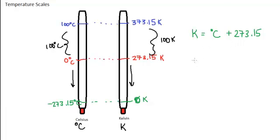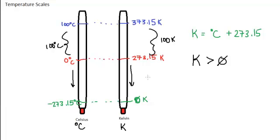One good thing to keep in mind, to make sure you don't accidentally go backwards with these subtractions or additions, is that the Kelvin temperature scale will always be positive — it will always be greater than zero. You won't ever calculate a negative Kelvin for anything that's real. But the Celsius temperature scale can be either positive or negative, depending on where you are relative to the freezing point of water.